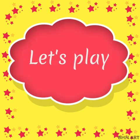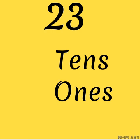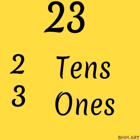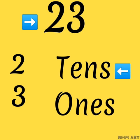Let's play a game. The number is 23. Can you tell me which number is 10s and which number is 1s? The number towards the right is 1s and the number towards the left is 10s. So it is 2-10s and 3-1s.